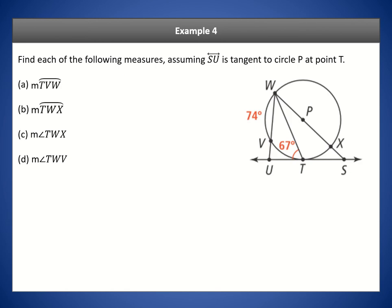For the final example, SU is tangent to circle P at point T. We want arc TVW. The angle between the chord and the tangent line is 67 degrees. By theorem 10.9, the intercepted arc has to be double 67, for a total of 134 degrees.